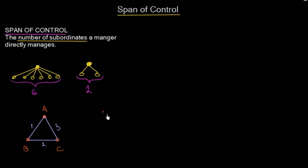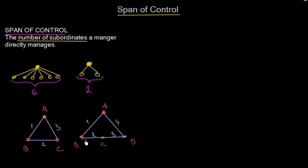Now let's add just one more person: A, B, C, and D. Let's see how many relationships we have now. We have the first, second, third, fourth, fifth, and sixth relationship. So we added just one more person — we increased the span of control by just one — and the manager now has to manage six relationships instead of three. That is the big difference, and that is why the span of control is so important.